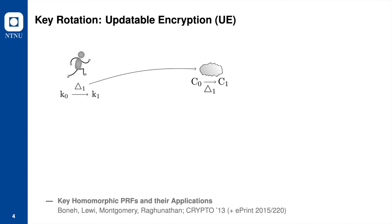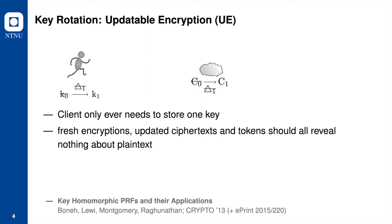Updatable encryption provides a solution that allows the cloud to update ciphertext from an old key to a new key. The cloud user generates an update token and sends it to the cloud. The cloud server uses this update token to update the ciphertext. The cloud user will delete the old key and the token when she sends out the updated token.